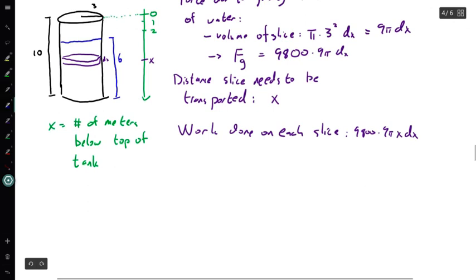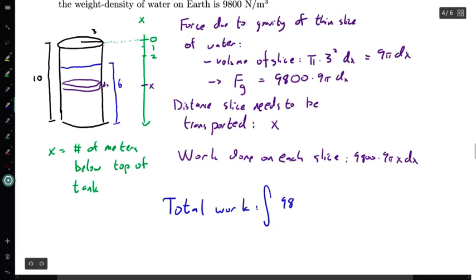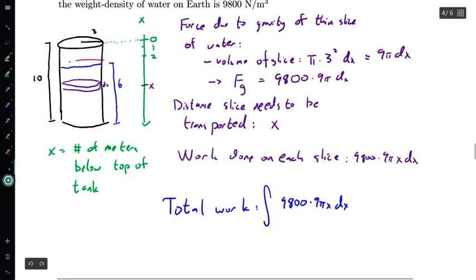In order to get the total work, then what we need to do is we need to add up all of the works done on the slices, which is integrate that function. So I need to integrate here. So we're integrating this 9,800 times 9 pi x dx. In order to do a reasonable integral here, we want to think about, well, what's the smallest x value that I have for my water? And I know that the smallest x value here is x equals 4. So since I am going from 4 meters from the top, corresponding to the fact that this is 6 meters, if the tank is filled 6 meters full, there are 4 meters left before the top of the tank. So my smallest x value is 4. My largest x value then is 10, since my largest x value corresponds to the water at the bottom of the tank here. And so I need to do this integral from x equals 4 to x equals 10.